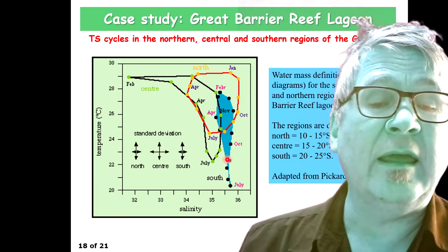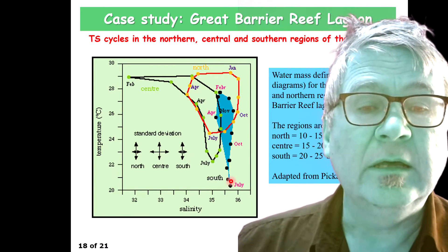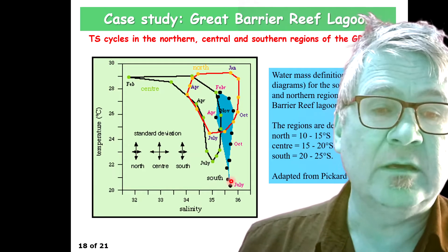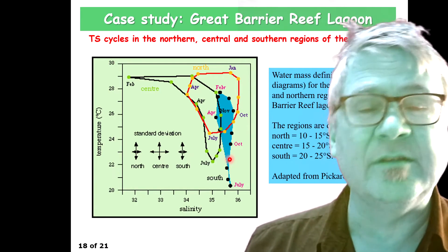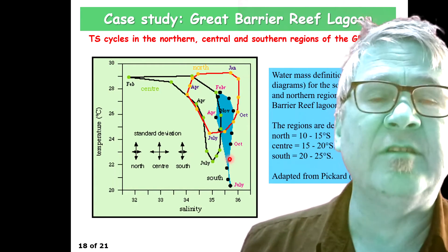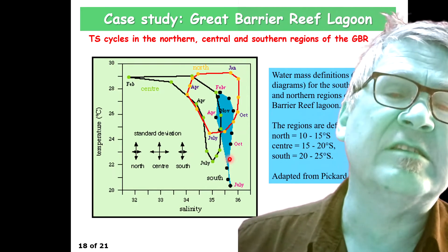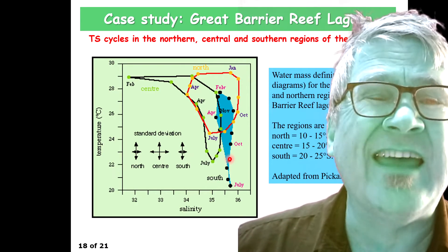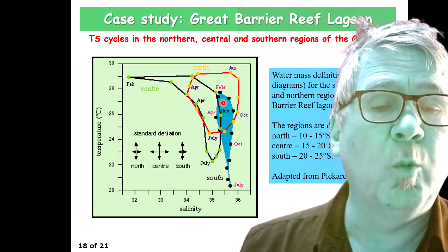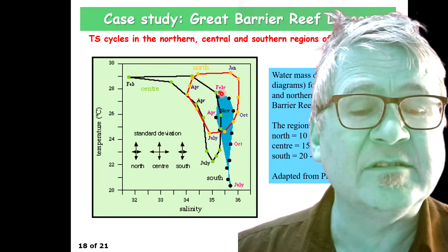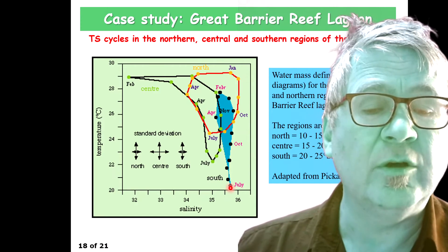The interpretation is: you see something similar to what you see in the open ocean, but just a little bit more enhanced because you're in shallower water. So you get warmer during summer and colder during winter.